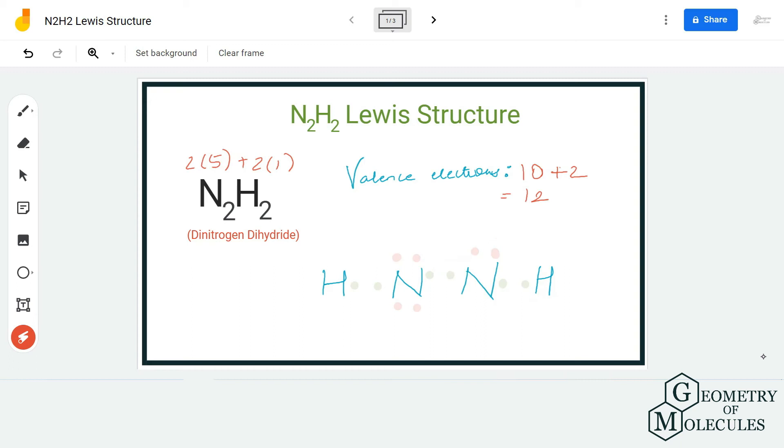To ensure that both these atoms have a complete octet, we can move this electron pair here and check if we can achieve a complete octet for this nitrogen as well.